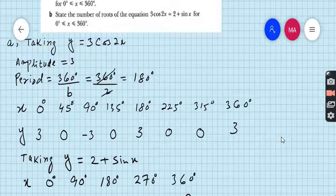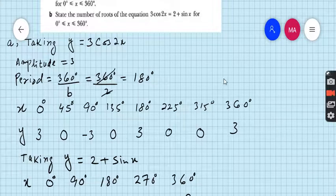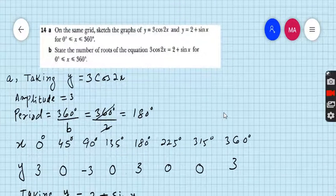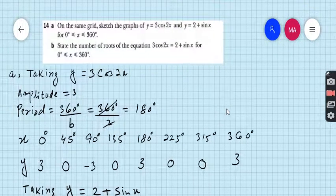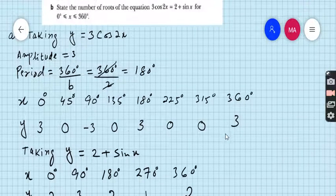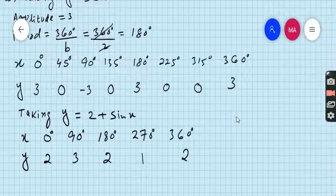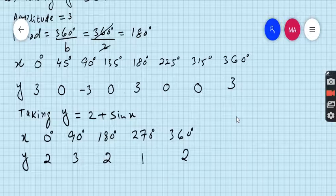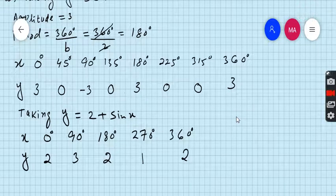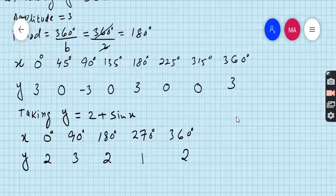Now we have to make the table of the second equation which is given y equals 2 plus sinx. Because the period of sin is a simple function, the period is 360. So you can take 90 degrees interval. When x is 0, sin 0 is 0, 0 plus 2 is 2.